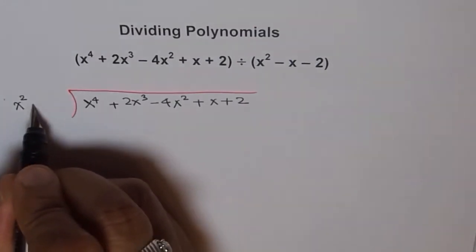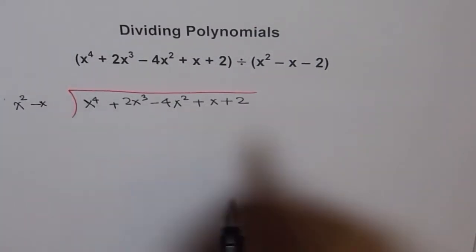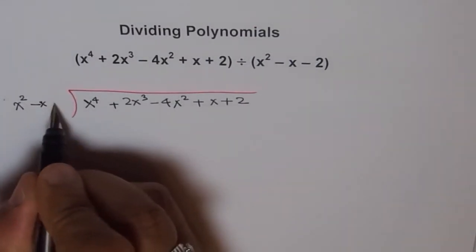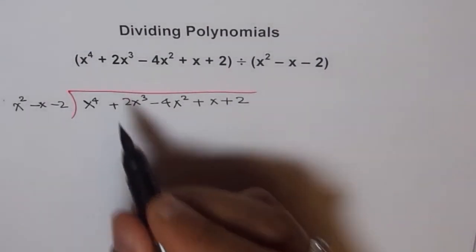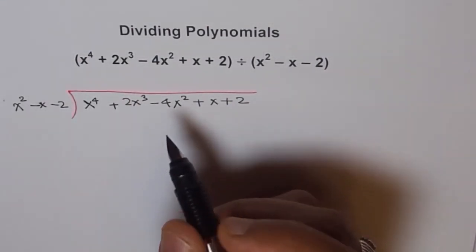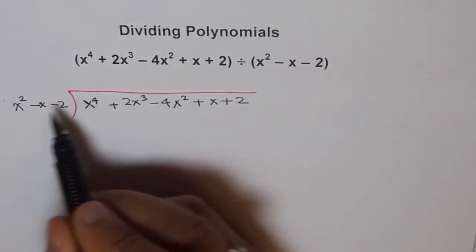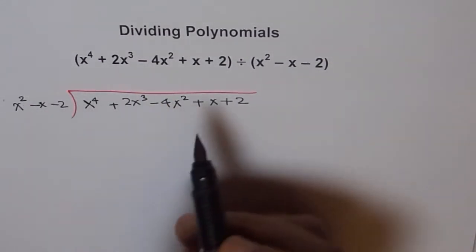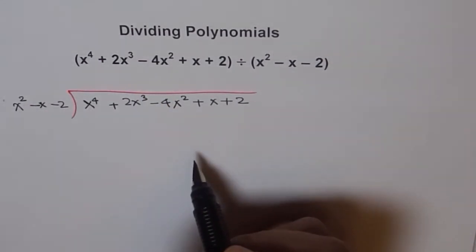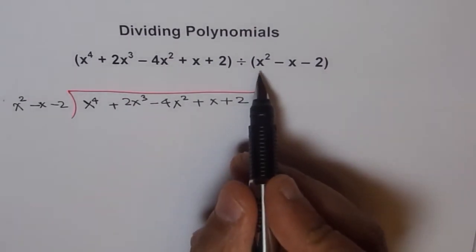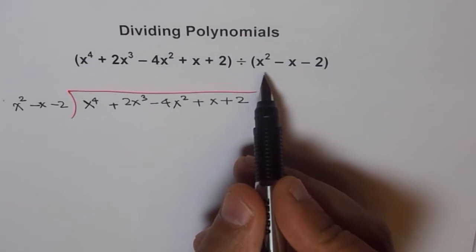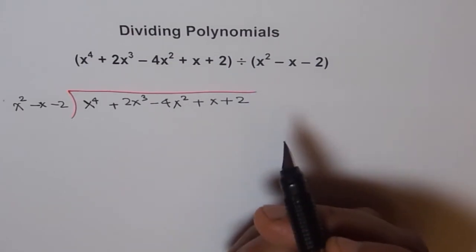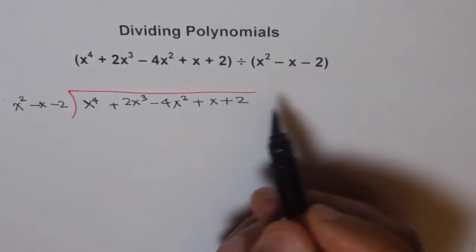minus x minus 2. What do you expect the degree of the quotient to be? The degree of the quotient should be 4 minus 2, which is 2. And what do you expect about the remainder? The remainder should be either of degree 1 or lower, like ax plus b.